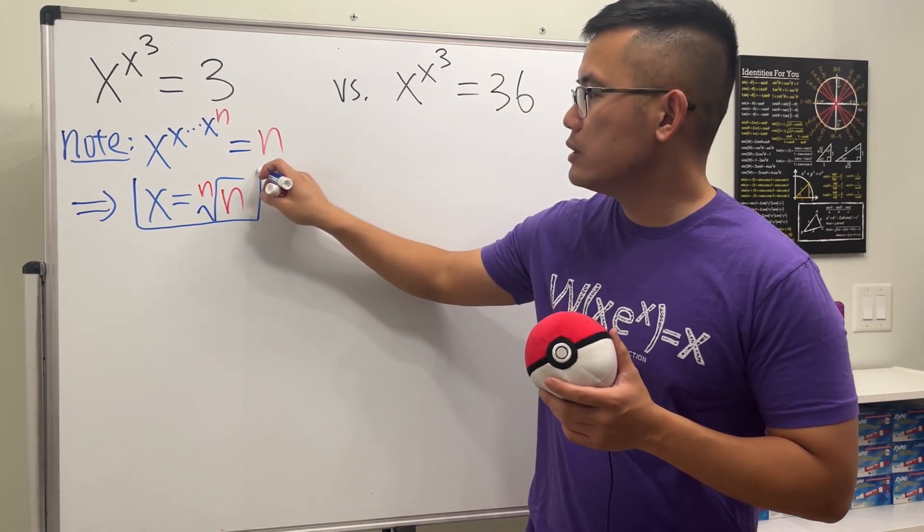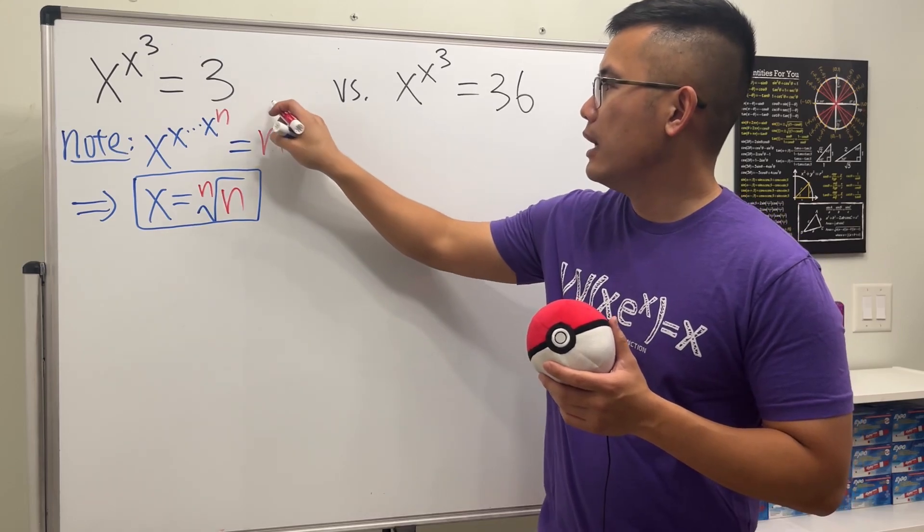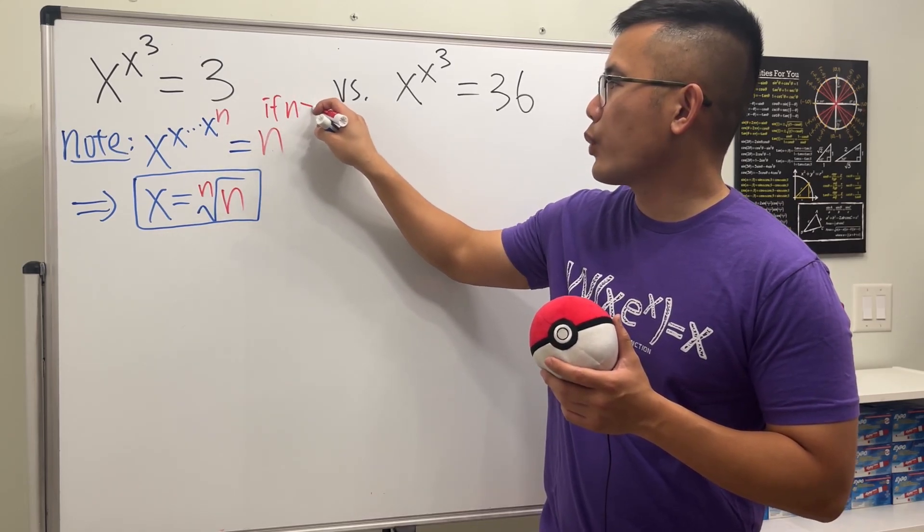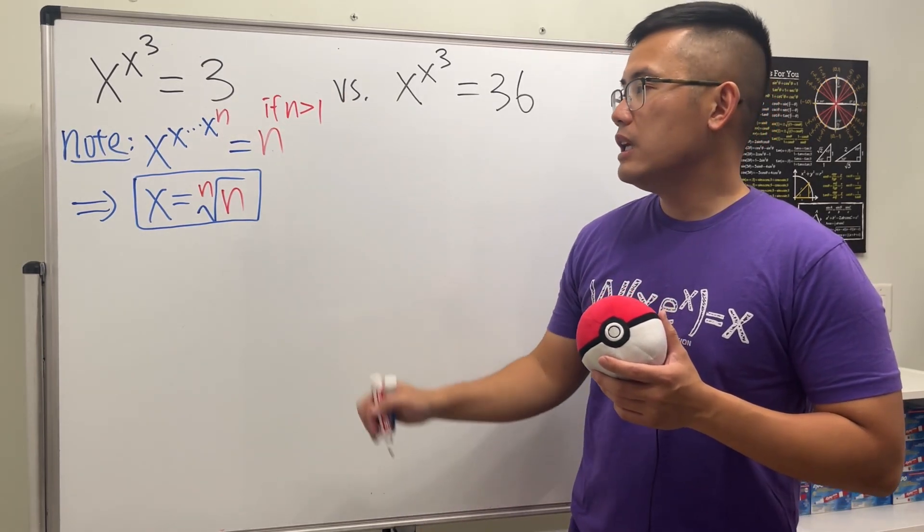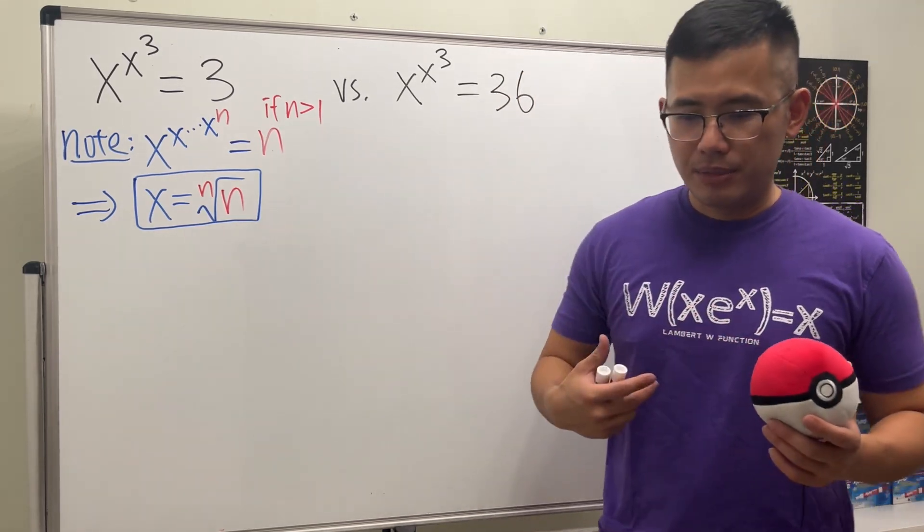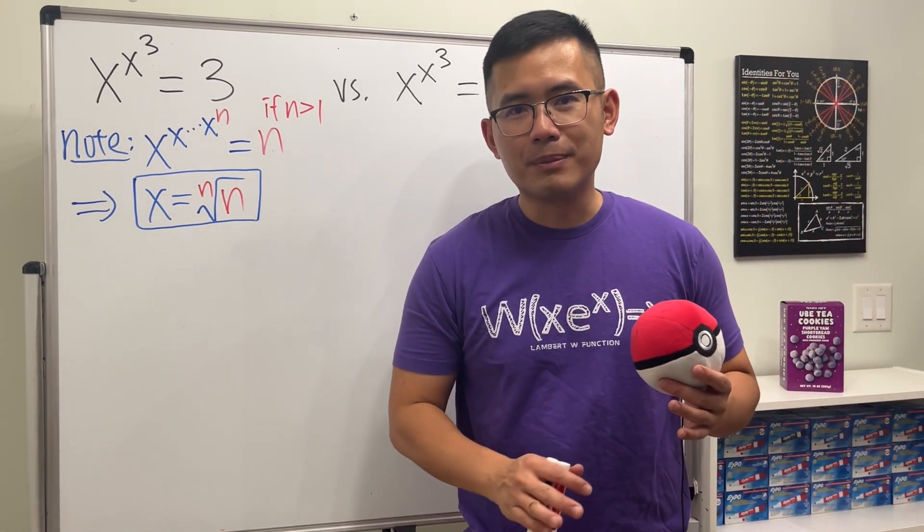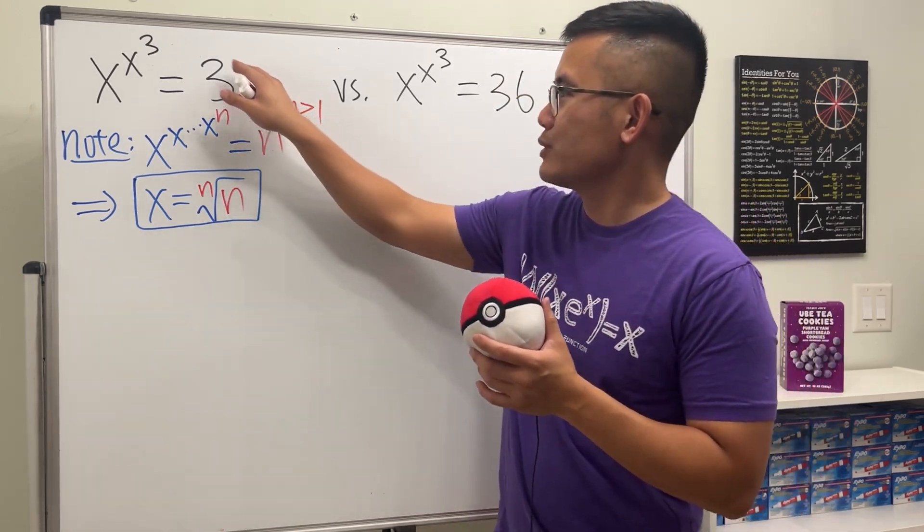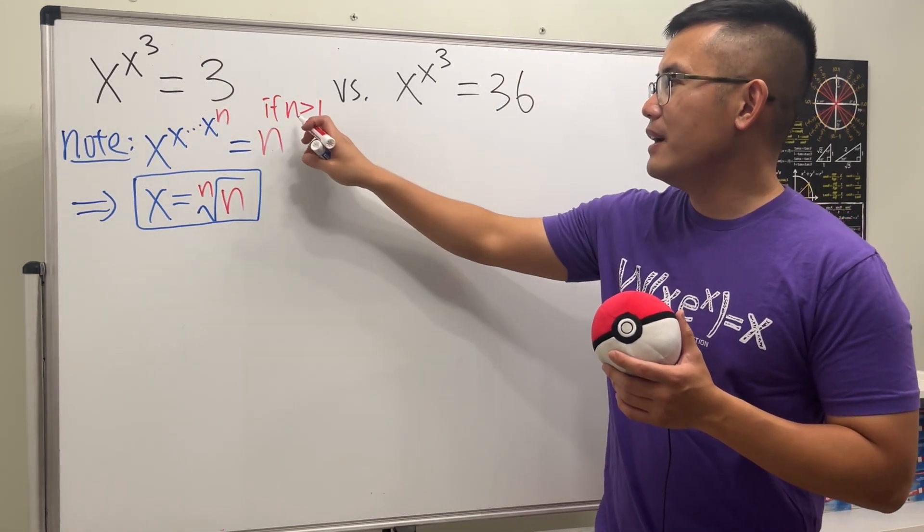And in fact, this will be the only solution if n is greater than one. If n is in between zero and one, then we will have to use the Lambert W function, but you can check on my other video for it.